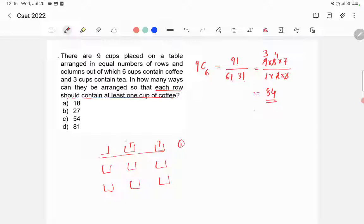Now here again, if you fill the second row with tea, all cups with tea, then that is also a possibility in which one row doesn't contain a cup of coffee. Similarly the third row.